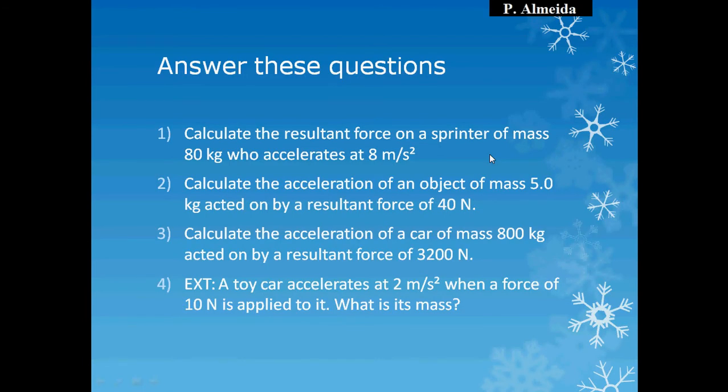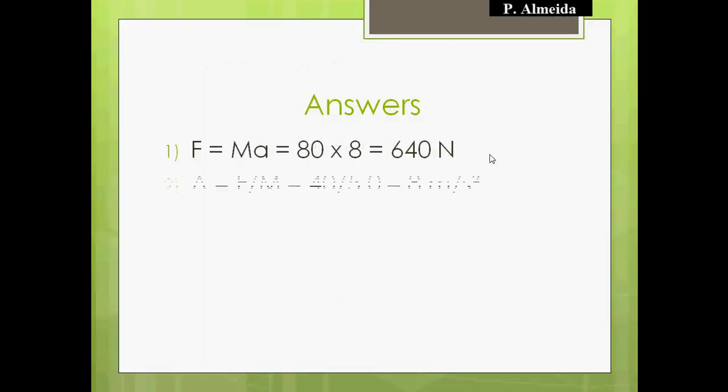Question two: calculate the acceleration of an object of mass 5 kilograms acted on by a resultant force of 40 Newtons. Acceleration equals force over mass: 40 over 5 gives 8, and the units are meters per second squared. Again, 3 marks — working out, number, and units.